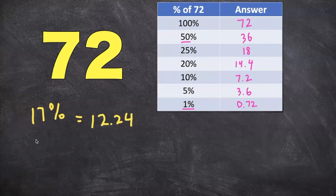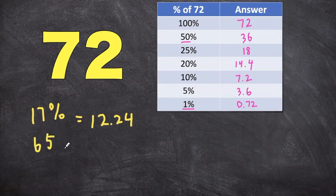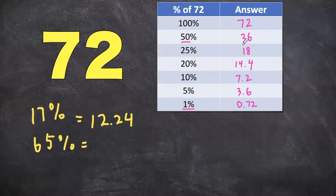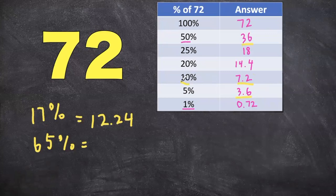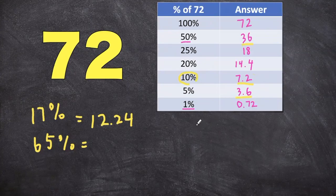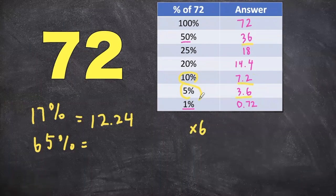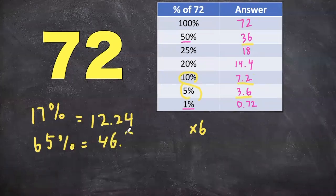Now just one more example here. If the problem asks us to find the 65% of 72, you can refer to the chart and certainly add the 50%, 10%, and the 5% numbers together. But what I usually do is take the 10% value, and then for this case, I can multiply that by 6, and then add another 5% to it. So when I do that, my answer comes out to 46.8.